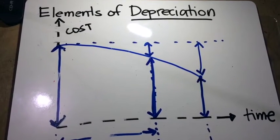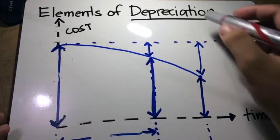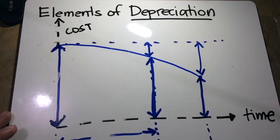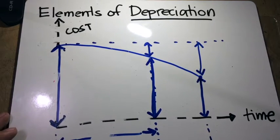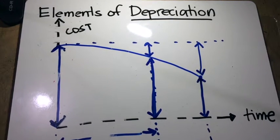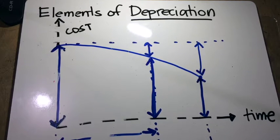In this lecture, let's talk about the elements of depreciation. So what is depreciation? Imagine I have an item that I bought and after a year or two, I will sell it. Of course, I cannot sell it for the same price that I bought it because I have already used it for two years.